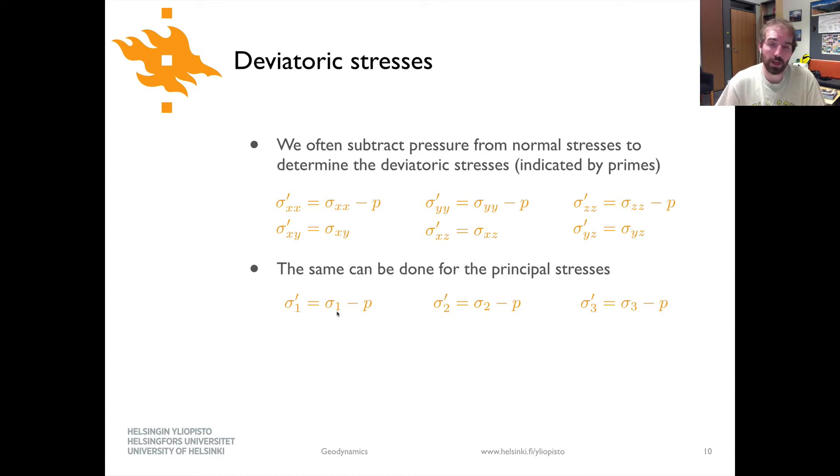You can do exactly the same thing for principal stresses. You could say that sigma 1 prime, the deviatoric principal stress, the largest deviatoric principal stress would simply be sigma 1 minus P, or the mean stress.